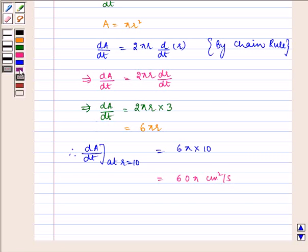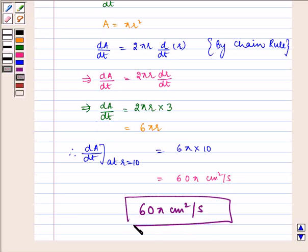Hence, area is increasing at the rate of 60 pi cm squared per second when r is equal to 10 cm, and this is our required answer.